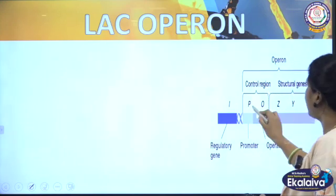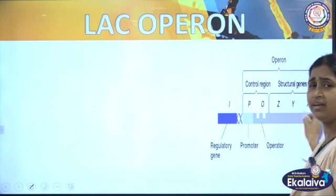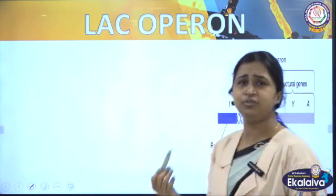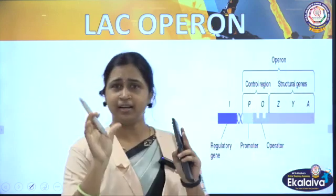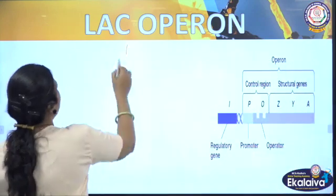You can see the letters I, P, O, Z, Y, A — it is a little confusing. I will give you a term to memorize: IPOZIA. That represents the full structure of the Lac operon, so we will not make any mistakes.